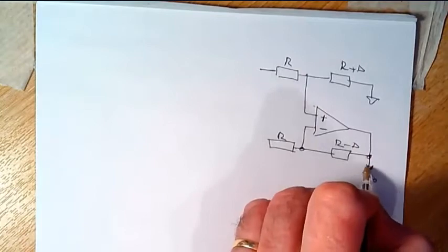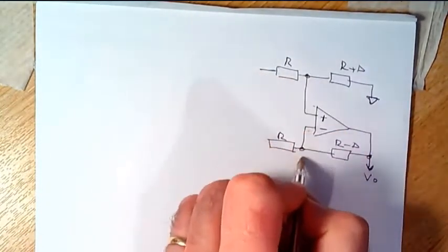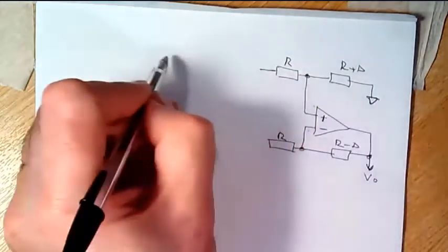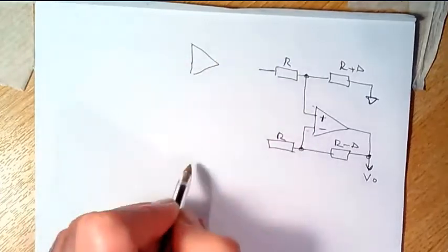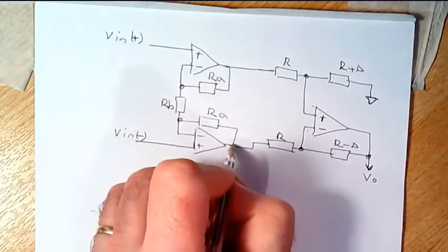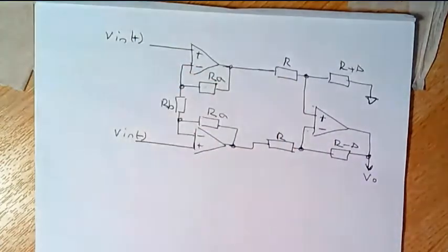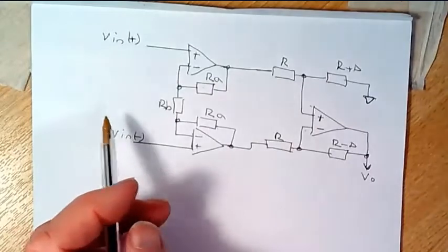Ground, and that is driven by two separate op amps up here, and we label the resistors around the two input amplifiers as RA and RB as you've been shown before.